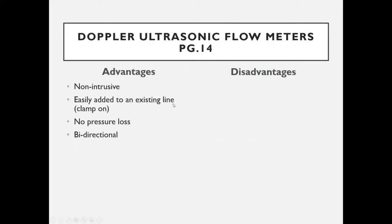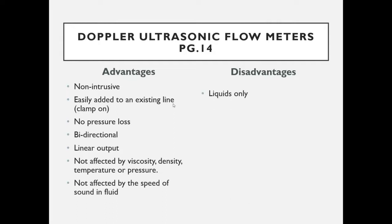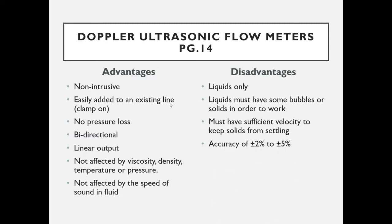Advantages of Doppler flow meters: generally non-intrusive, easily added to an existing line — especially clamp-on versions — with no pressure loss. They are bi-directional, linear, and not affected by viscosity, density, temperature, pressure, or speed of sound in the fluid. Disadvantages: Doppler is only good for liquids, those liquids must have bubbles or solids present, and must have sufficient flow velocity to keep those solids from settling out. Accuracy is 2–5%.